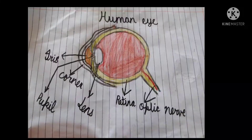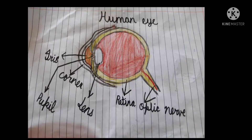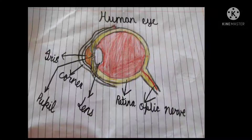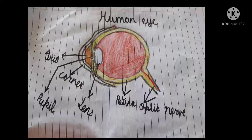The diaphragm helps us to breathe. This is the structure of the eye. It consists of the iris, cornea, pupil, lens, retina, and the optic nerve. The optic nerve connects our eye to the brain.